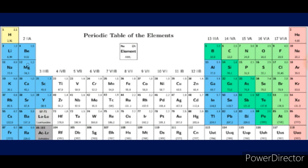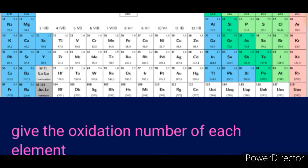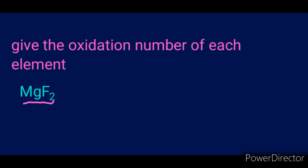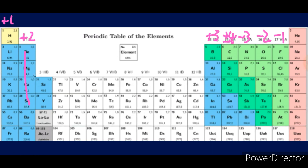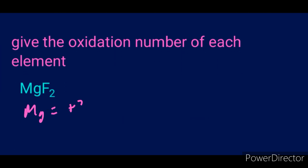Magnesium is in group two. In group one the oxidation number is +1; in group two it's +2; in group three it's +3. In the last group it's −1, then −2, then −3. For the group in between it can be plus or minus depending on the situation. So since magnesium is in group two, its oxidation number is +2.